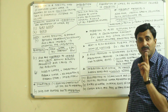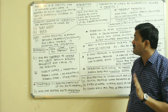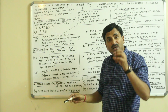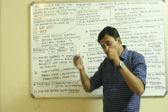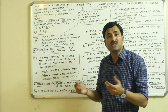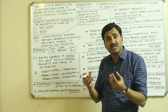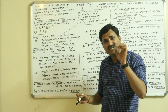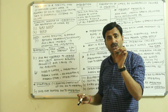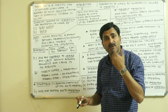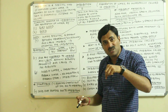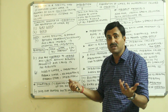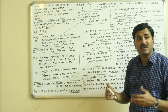Now two classical examples to represent imbibition: the first is dry wood. If you take a dry wooden piece and place it in water, it will swell — its volume will increase — and we say imbibition has occurred. The second example is a seed. Seeds have very little or no water. When you sow a seed in soil, water moves inside, the seed coat bursts, and a young seedling emerges — this is due to imbibition.